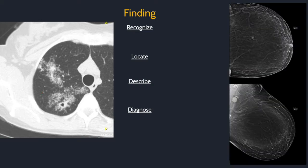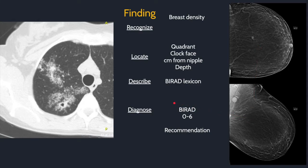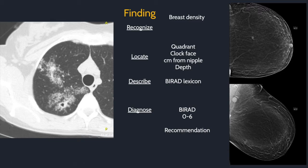Breast imaging is very similar. For a mammogram, we first start with breast density — this one is almost entirely fatty. Then we recognize the lesion, locate it with descriptors (this one would be in the lower left breast at 6 o'clock, 10 centimeters from the nipple in the middle depth), then describe the lesion with the BI-RADS lexicon: an equal density irregular mass with spiculated margins. Then give it a BI-RADS number and recommendation — BI-RADS 5, recommend biopsy. We'll go through each of these steps one by one and spend most of the time on location, because that is the most confusing concept.